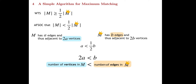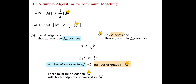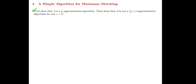Think about what 2A < B really means: if the number of vertices in M is less than the number of edges in M-crown, there must be some edge in M-crown where both endpoints are not covered by M. But if both endpoints of an edge in M-crown are uncovered in M, that edge could have been added to M — contradicting the fact that M is a maximal matching. This contradiction proves the inequality holds, establishing the one-half approximation.